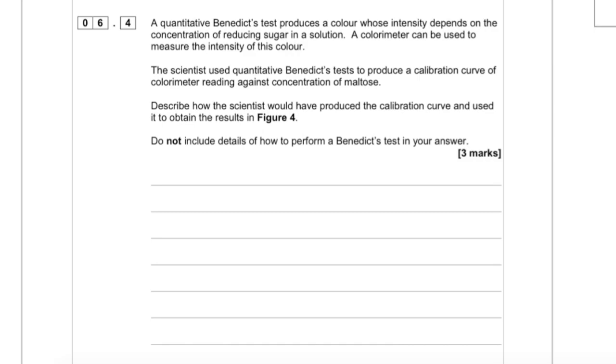Now, the scientists have used this test to produce a calibration curve of colorimeter reading against concentration of maltose. Describe how the scientists would have produced the calibration curve and then used it to obtain the results in figure 4, but do not include details of how to perform a Benedict's test in your answer. Now, the first thing that you should do when you're looking at this is identify: if it's not testing your knowledge of the Benedict's test, what could it be testing your knowledge of? The students who did this really successfully actually identified that this was instead testing your knowledge of required practical 3 - the practical where you produce a dilution series of sucrose to then produce a calibration curve in order to identify the water potential of plant tissue. This is very similar, in fact.